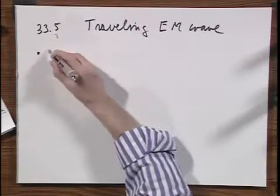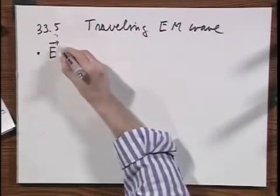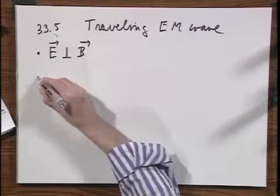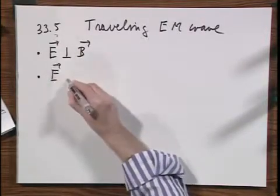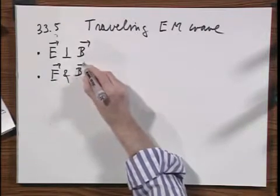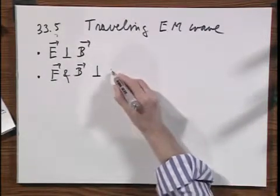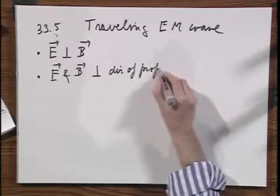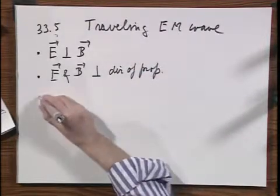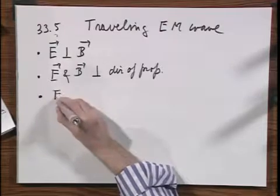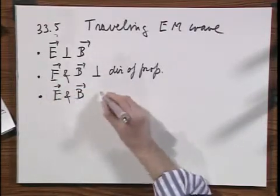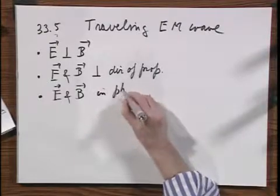The first thing that I happen to remember is that the E vector is always perpendicular to the B vector. The second is that E as well as B are both perpendicular to the direction of propagation.